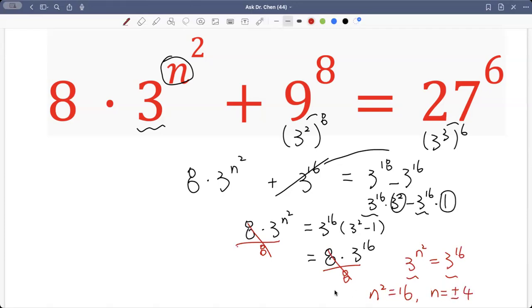Okay, that's it. So n can be positive 4 or n can be negative 4.